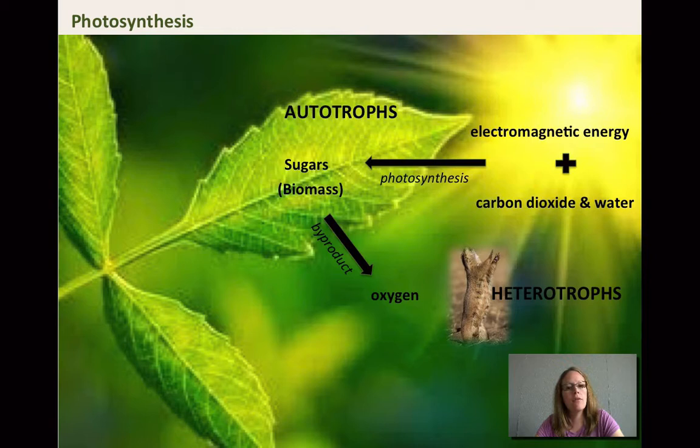Autotrophs meaning that the organism can make its own food. Heterotrophs depend on the autotrophs to have that food. Don't forget though that plants also respire. It's a common mistake that we think that plants photosynthesize and organisms heterotrophs respire. But plants also use oxygen to break down the sugars that they're making. The sugars aren't just for us.